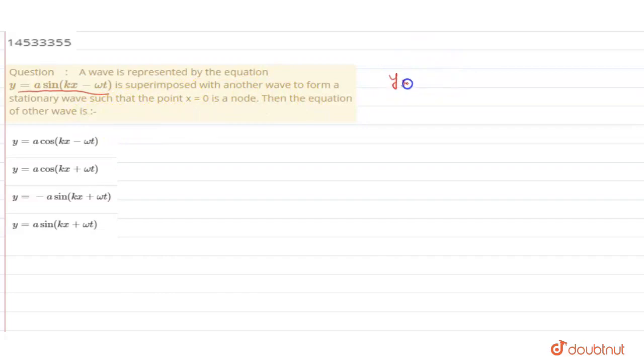So, y resultant is given by the summation of y plus y'. Y' is the other wave equation, let it be denoted by y'. Now, this will be equal to 0 at x = 0.